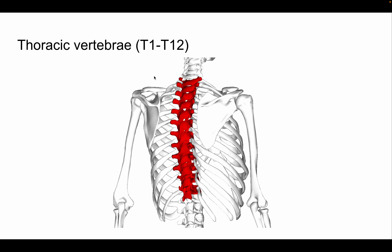Now let's get into the thoracic vertebrae. The reason we start with thoracic first is that the thoracic vertebra represents the average vertebra — it has most of the parts that all other vertebrae will have. This is T1 through T12, located in the thoracic region.